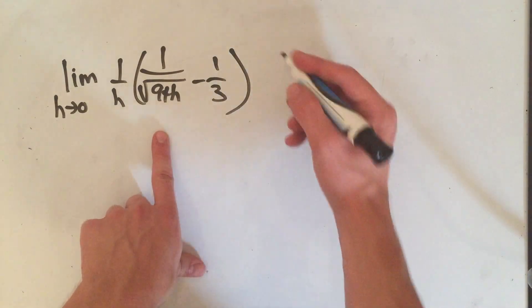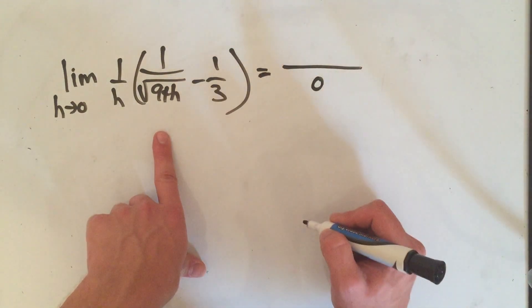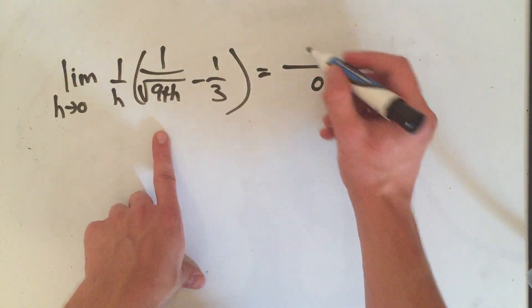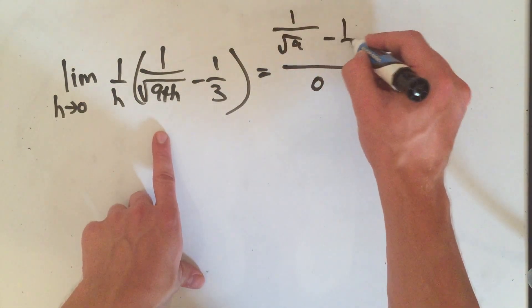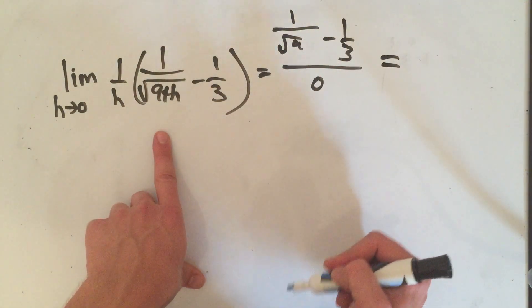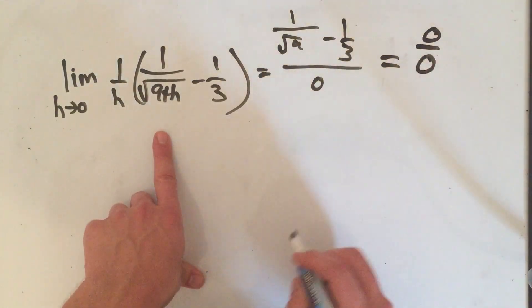So let's start where we always start. I plug in zero and see what happens. If I plug in zero, well I've got zero on the bottom for h. On the top I'll get 1 over square root of 9 minus a third. Square root of 9 is 3, so I get a third minus a third is zero on the top, zero on the bottom.